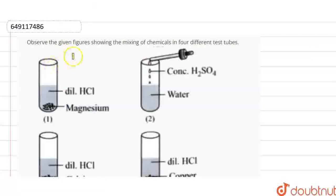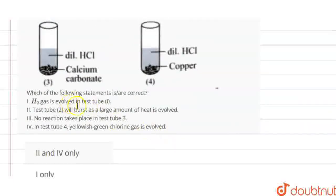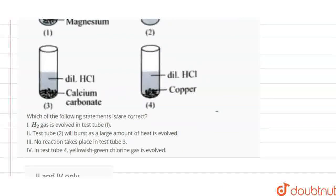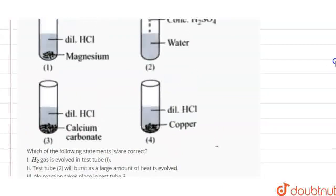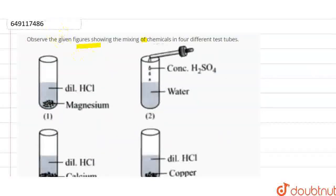Hello, the question is: observe the given figures showing the mixing of chemicals in four different test tubes. We need to tell which statements are correct. Statement 1: H2 gas evolved in test tube number 1. Statement 2: Test tube number 2 will burst as a large amount of heat is evolved. Statement 3: No reaction takes place in test tube 3. Statement 4: In test tube 4, yellowish green chlorine gas is evolved. Okay, so one by one, let's see.